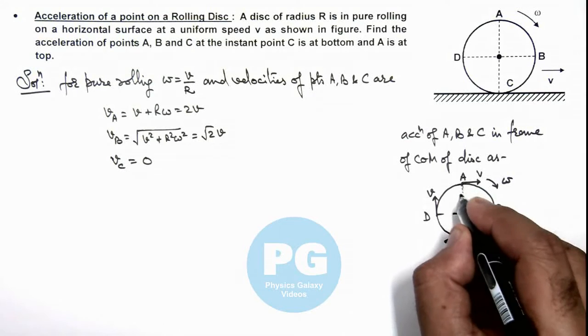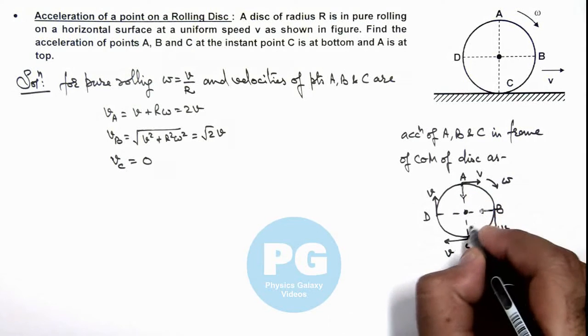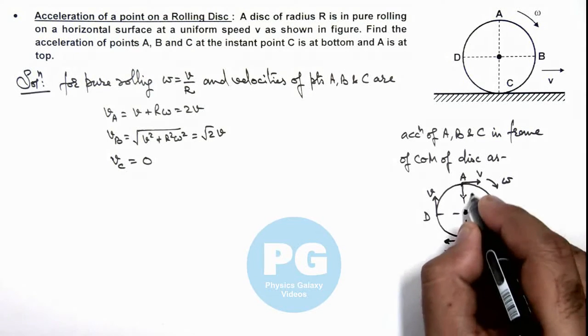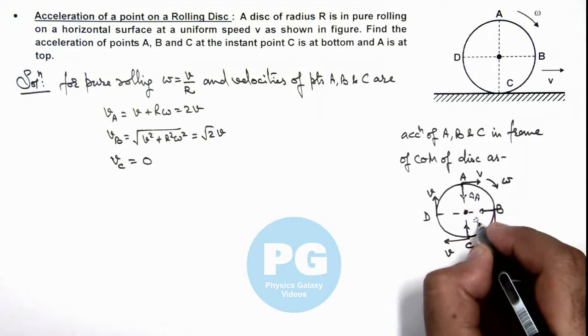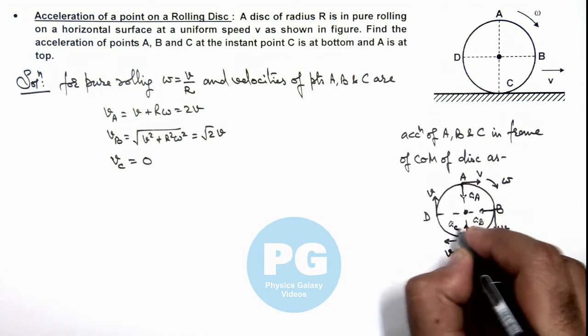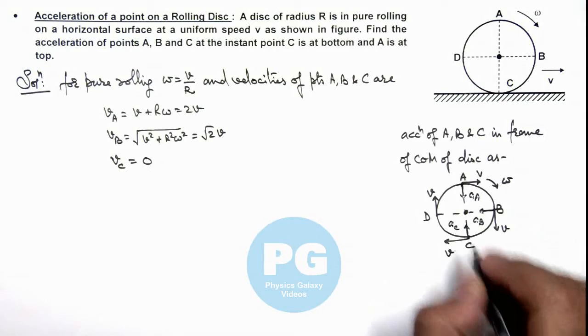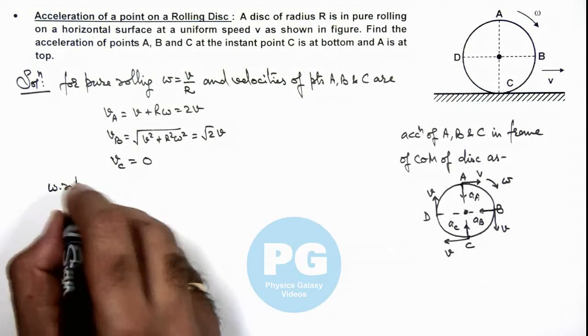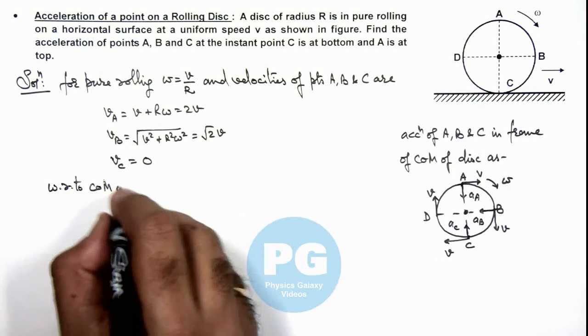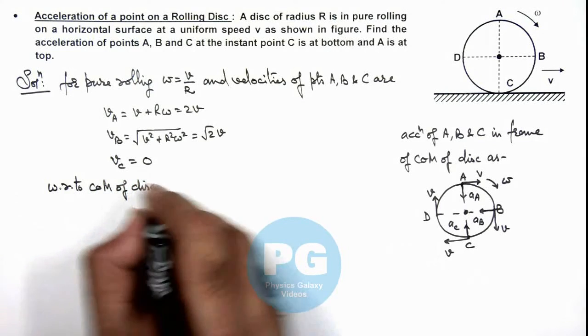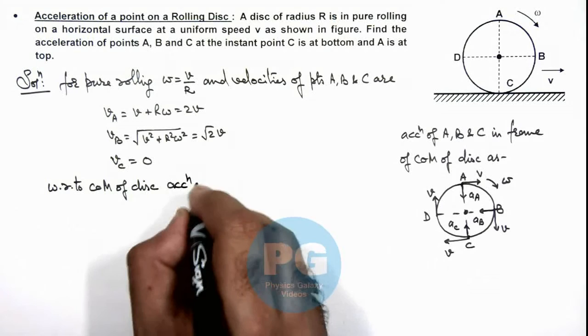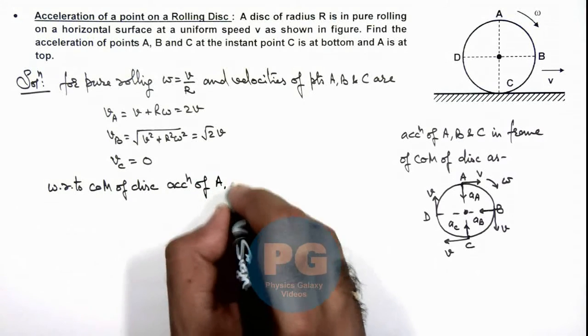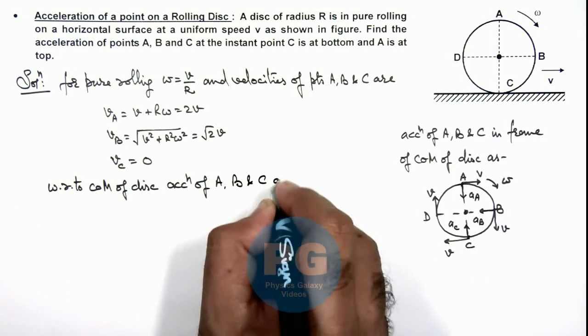So they are having only normal acceleration acting towards center. This as a_A, this as a_B and this as a_C. So here we can write, with respect to center of mass of disc, acceleration of A, B and C are: